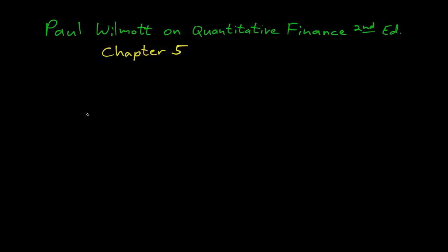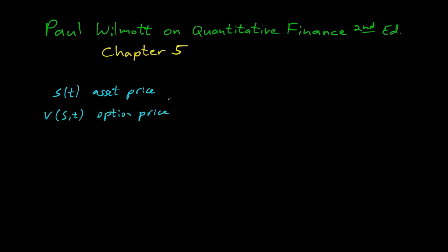Let's derive the Black-Scholes equation. We've paid the price by doing the technical lemmas, now let's get the payoff. So we have S of T as our asset price, and V of S and T is our option price — specifically one call option. How do we find a formula for V? Let's make an assumption.